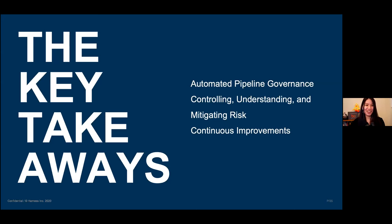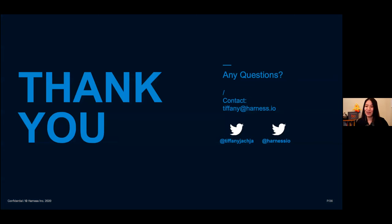Automated pipeline governance is about controlling, understanding, and mitigating risk. Even though you can't do these things all at once, we can get there through increments — we can continuously improve. I hope this session was really helpful. I'll stick around to answer any questions, and I really appreciate the time you all spent with me. Thank you so much. If you have any questions, feel free to reach out.